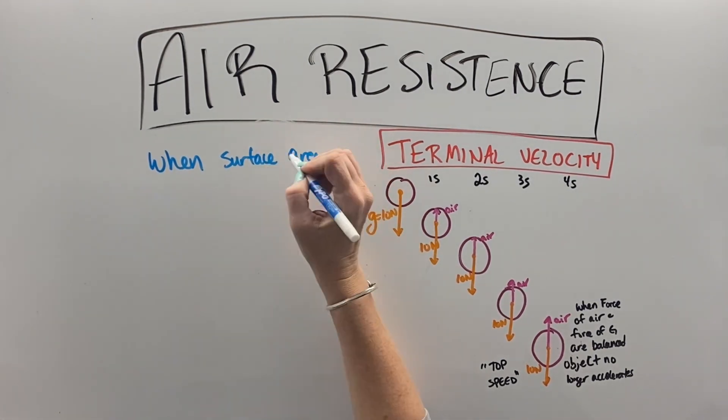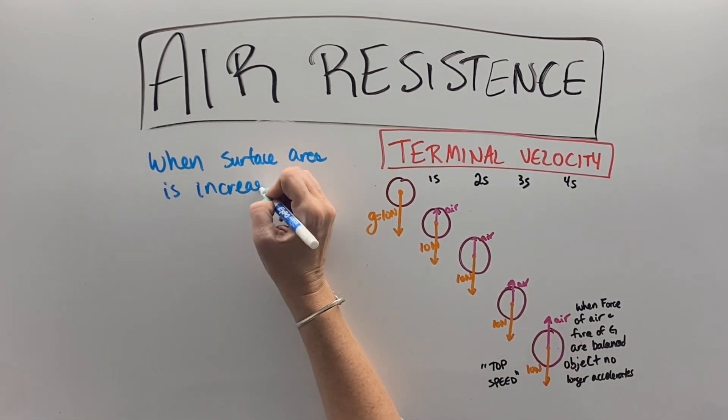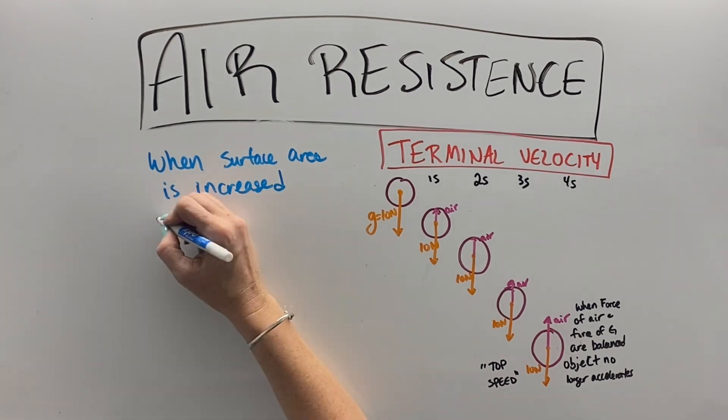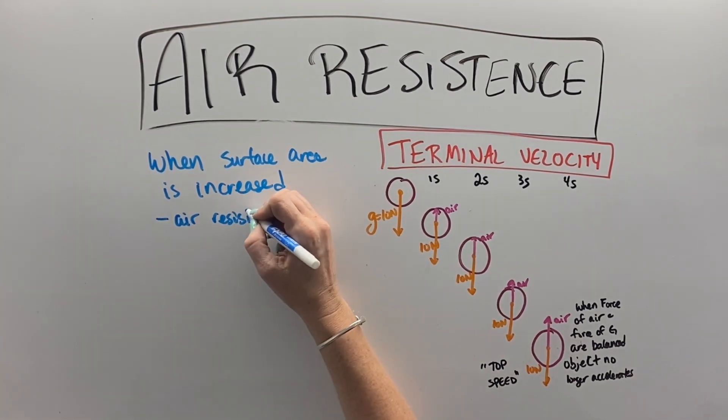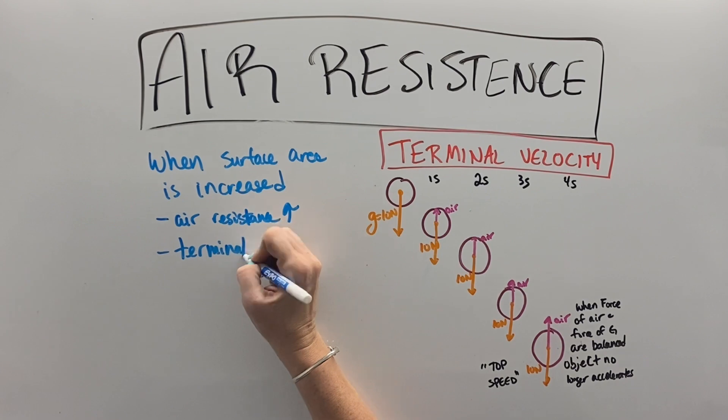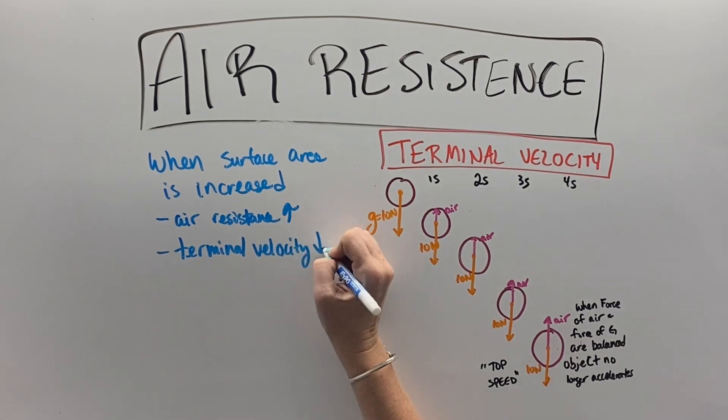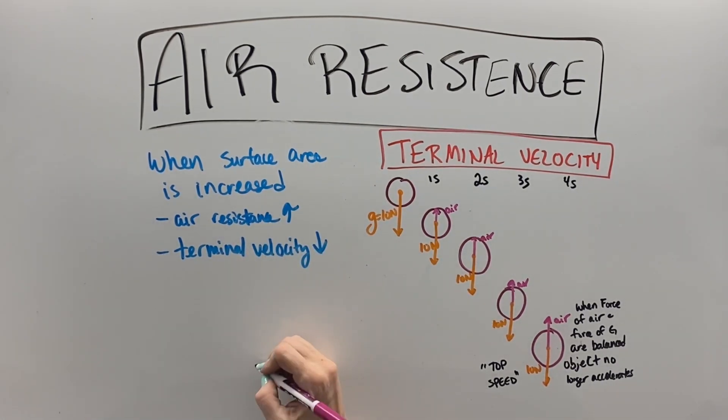So when the surface area of an object is increased, like when Macy was trying to run with that blanket, the air resistance increases because there's more surface of the air pushing against the object, and the terminal velocity goes down. The object has a lower top speed, like when we put a parachute on an object.